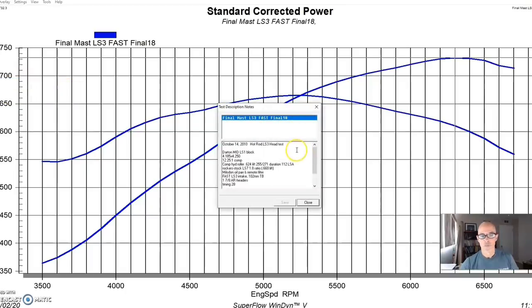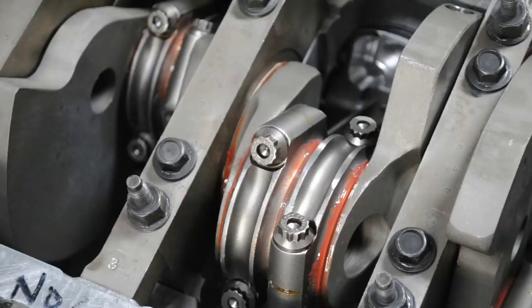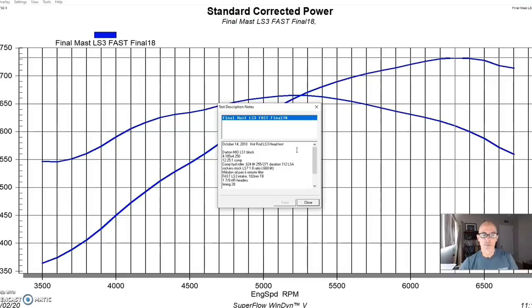It was a 4185 bore, obviously that's why we had to sleeve the block, and a 4250 stroke. So the sleeves supplied by the Darton guys were both thicker so we could go out in bore size, and they were longer, which added stability down at the bottom of the stroke when we had these longer stroke lengths. So 4.25-inch stroke, quite a bit of gain, and this was a big displacement, 468 inches.